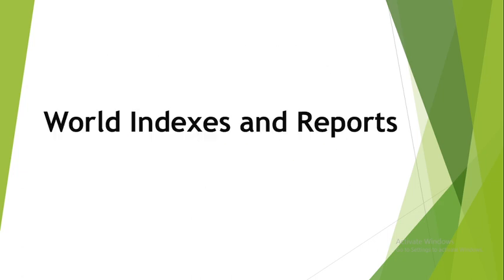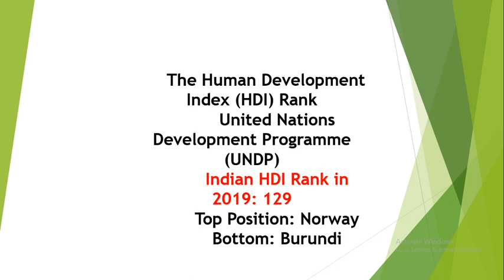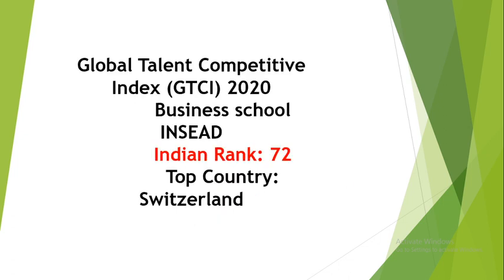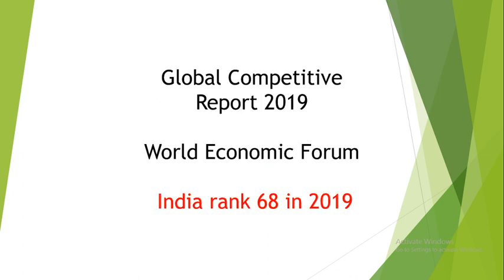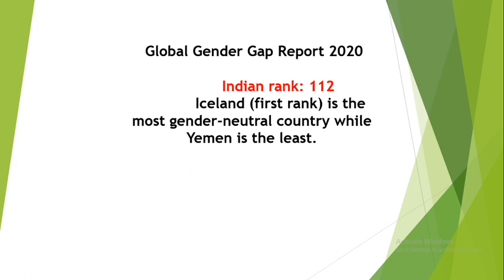Let's revise. Human Development Index — published by the United Nations Development Program, UNDP. India's rank is 129. Top country: Norway. Bottom: Burundi. Global Talent Competitive Index — published by a Business School. India's rank is 72. Top country: Switzerland. Ease of Doing Business — World Bank. India's rank is 63. Top: New Zealand. Global Competitive Report — World Economic Forum. India's rank is 68. Global Gender Gap Report — India's rank is 112. Iceland is top.